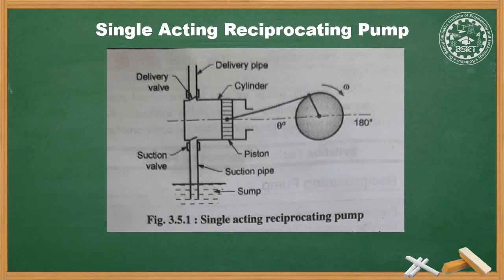When a graph is plotted between discharge and crank rotation, it shows that during 0 to 180 degrees (suction stroke) there is no discharge. From 180 to 360 degrees, discharge gradually increases until 270 degrees, then decreases. This shows that the discharge through a single acting pump is intermittent — that is, not regular. The single acting pump has a single suction and delivery pipe.